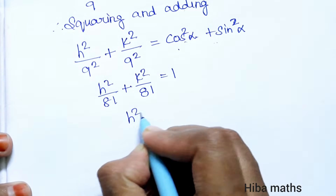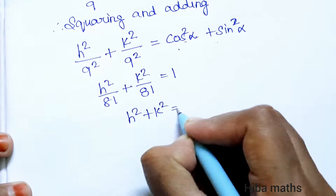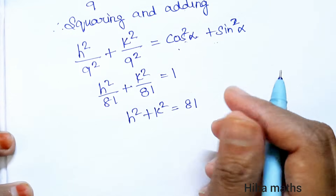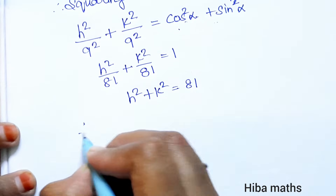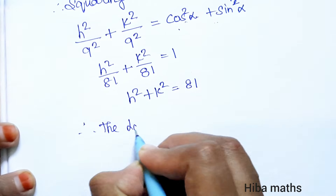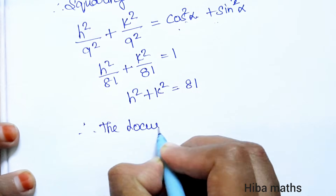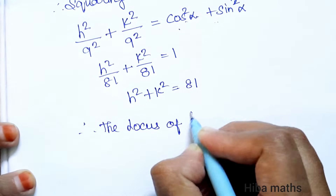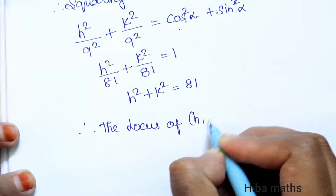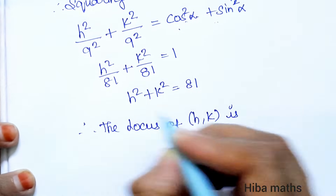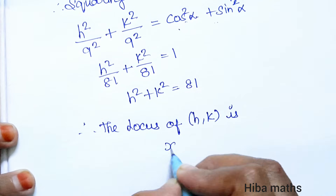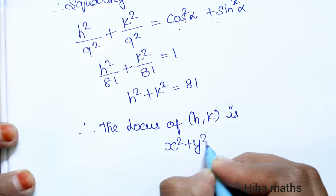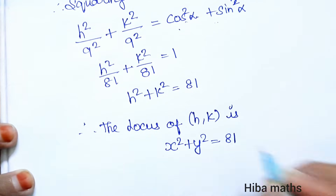Since the denominators are the same, H squared plus K squared equals 81. This is the required locus. Replacing H and K with x and y, the locus of P is x squared plus y squared equals 81.